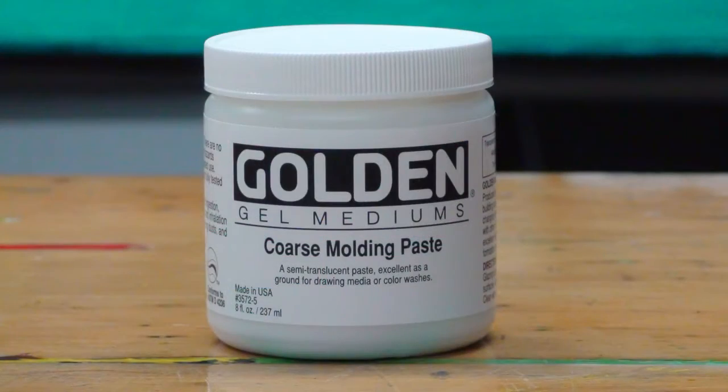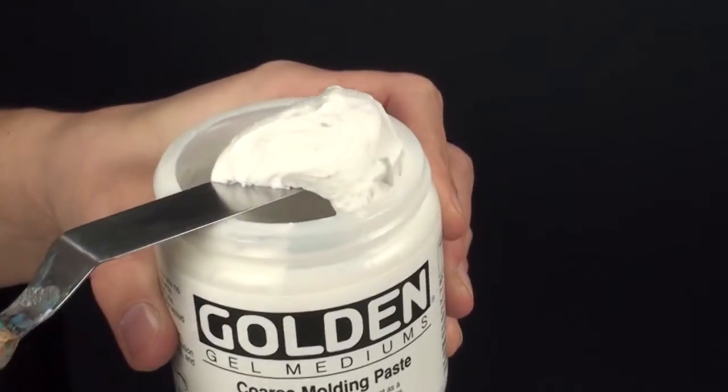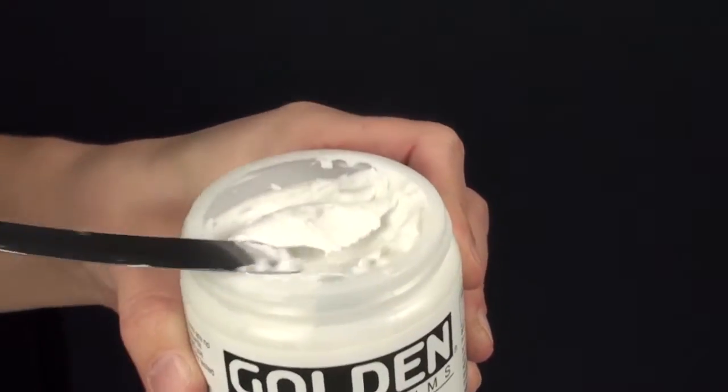Coarse molding paste is made with crushed marble to produce an opaque paste with an absorbent and toothy quality. The consistency of coarse molding paste is similar to our regular gel or heavy body colors and is excellent for building textured surfaces.